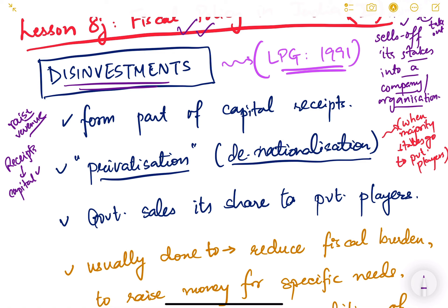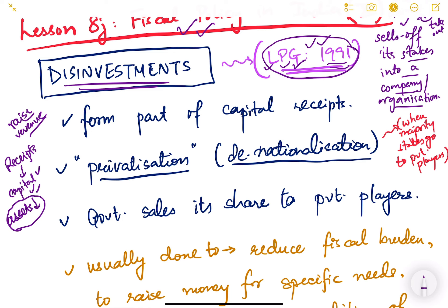This is one of the sources by which the government raises revenue, and whatever receipts are obtained by disinvestment, they go into capital receipts. Because once you sell off any of your assets or disinvest into any of your company shares, your assets will reduce. So it results in the reduction of assets and therefore it is a capital receipt. Disinvestment as a policy was adopted after the LPG reforms of 1991.